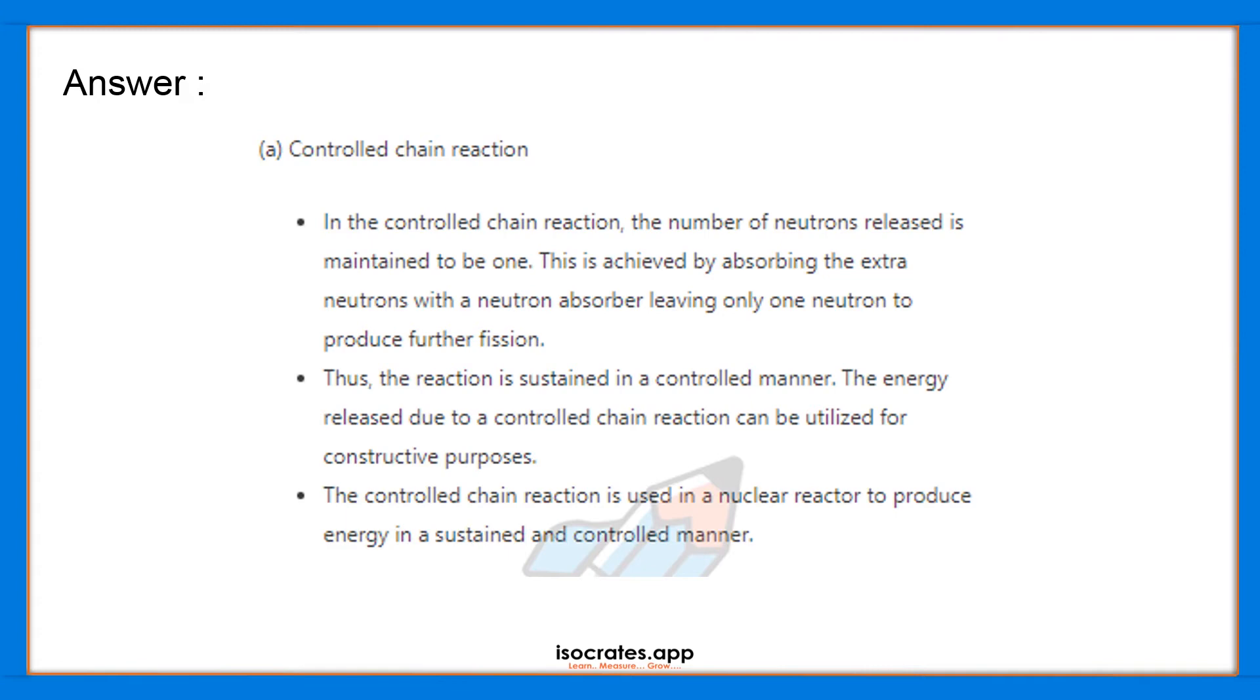We are given that in each nuclear reaction, this much energy is released. So if we control the number of neutrons which is responsible for kick-starting the nuclear reactor, then we can in turn control the amount of energy the reactions or the reactor produces. And this energy can be used for constructive purposes such as to produce energy.